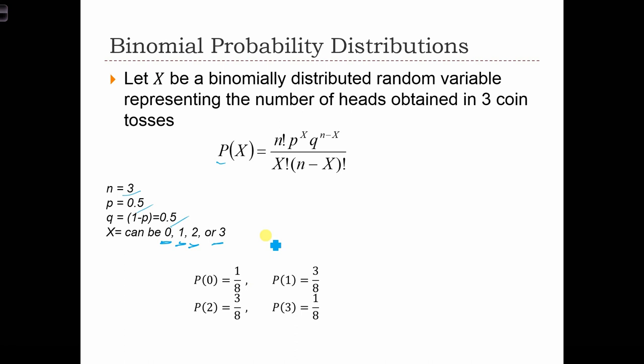So if we plugged in the numbers 0, 1, 2, and 3 for x, we can calculate the different probabilities. The probability that x equals 0, the probability that it equals 1, 2, or 3.